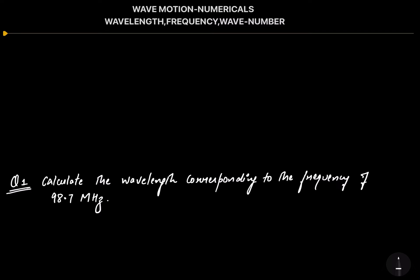First of all, let's talk about wavelength. The linear distance traveled by one complete crest and one complete trough is called wavelength. The formula is: frequency nu equals C divided by lambda, where C is the speed of light.